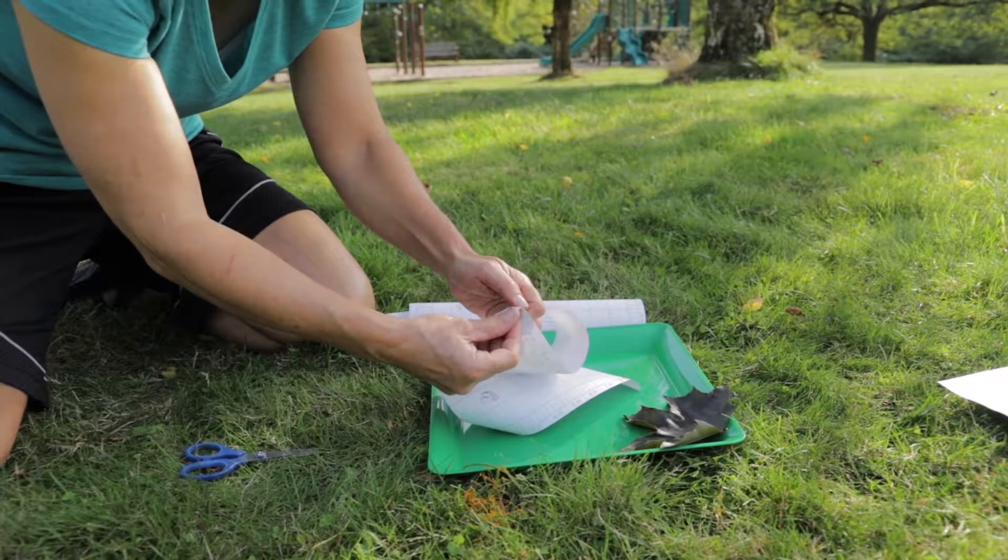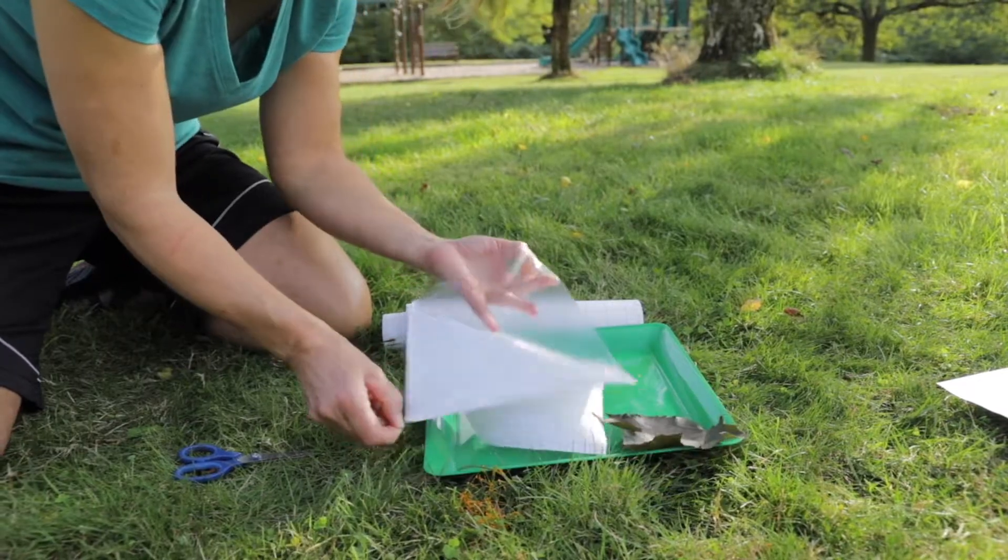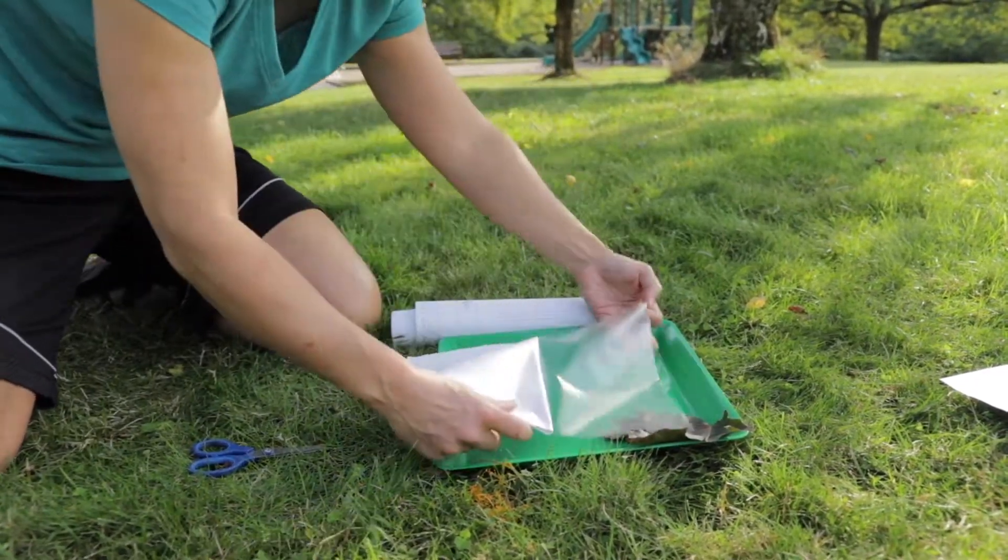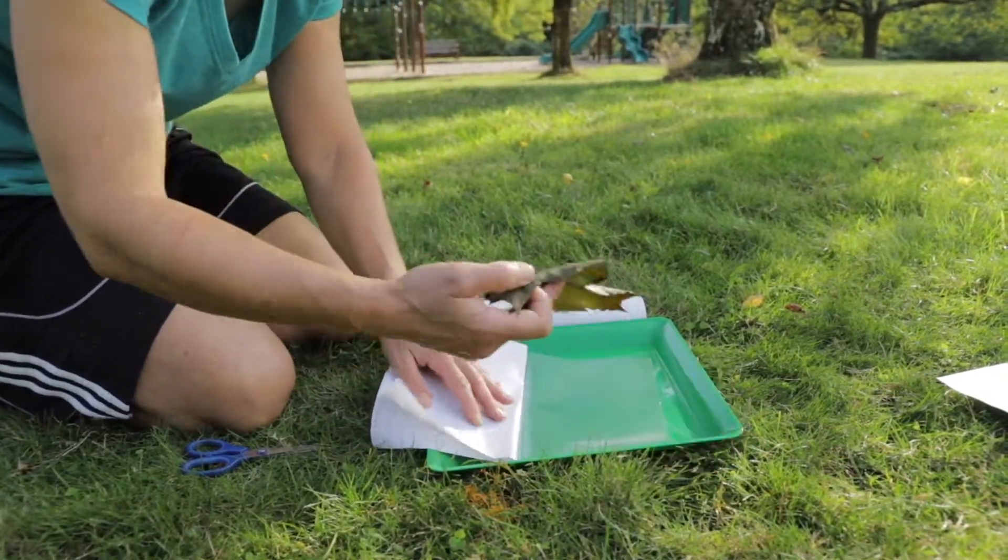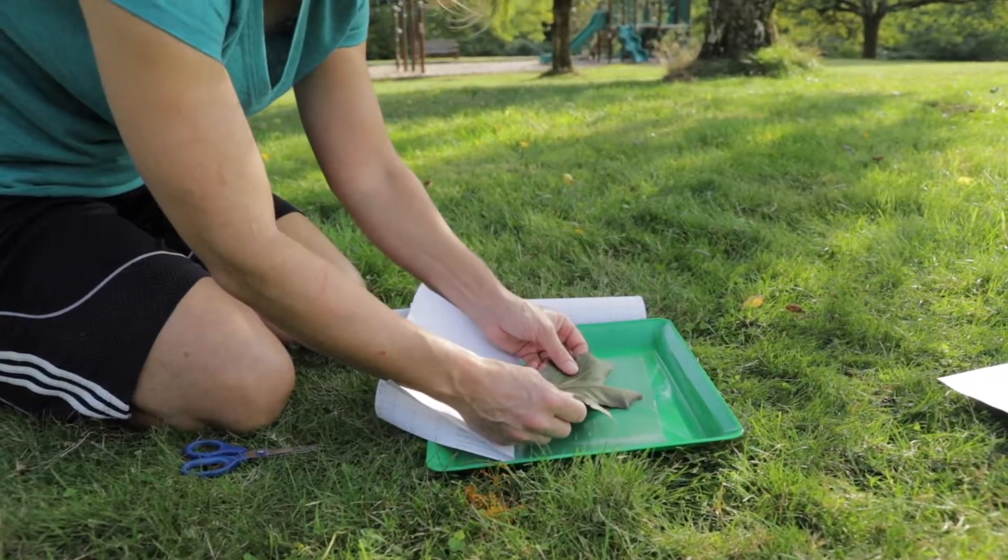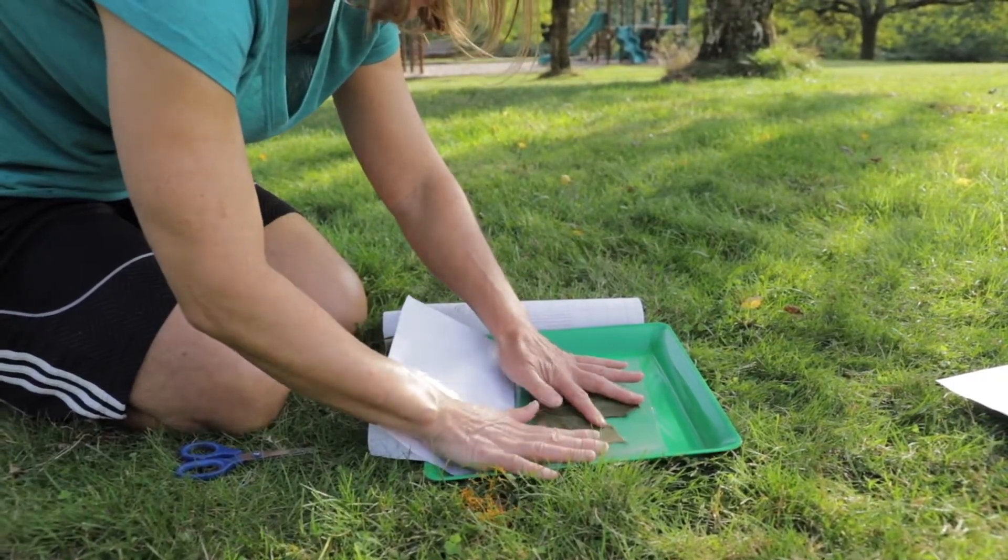Then you'll peel off half of it only. Here we go, here's half. I'm going to peel it to the crease line that is half. And take my leaf and place it on the contact paper nice and flat.